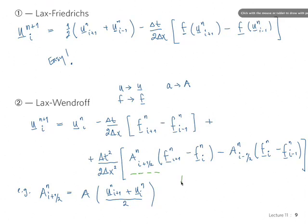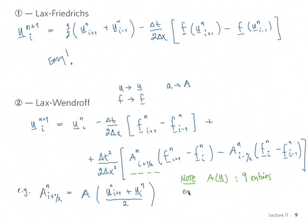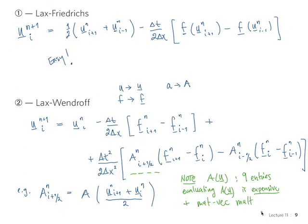Recall that in this case A(u) is a matrix with nine defined entries, all non-linear functions of u, so evaluating A(u) can actually be quite expensive. In addition to being expensive to evaluate, we also have a matrix multiplied by a vector, so there are matrix-vector (Matvec) multiplications, which are also expensive. This means evaluating A(u) can be a major expense in Lax-Wendroff for the Euler equations. In the scalar case, we don't have that problem.